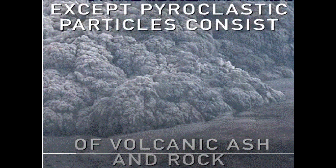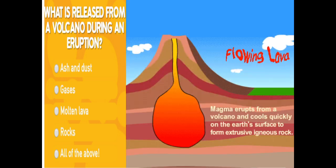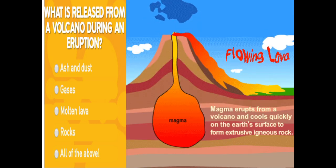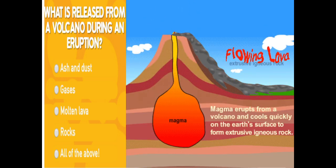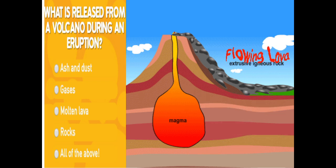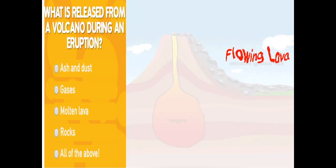Pyroclastic particles consist of volcanic ash and rock. What is released from a volcano during an eruption? Ash and dust, gases, molten lava, rocks — all of the above.